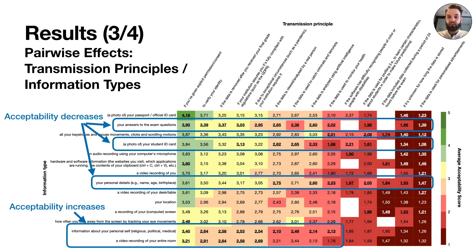Acceptability even lifts to slightly above neutral for the transmission principle of giving explicit permission or consent. This is an interesting finding, as one of these two types of data — the highly sensitive religious, political, and medical data — should under no circumstances be exposed within the context of education and, at least in Europe, is not allowed by the GDPR. The other information type, a video recording of your entire room, previously deemed highly unacceptable, also becomes more acceptable under certain conditions.